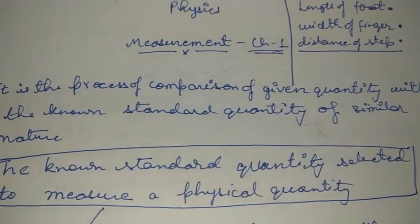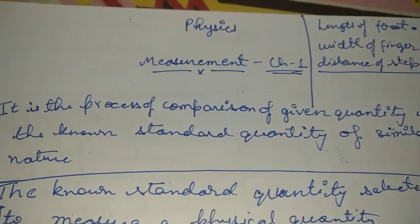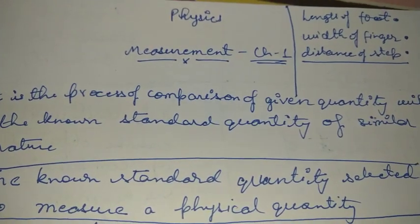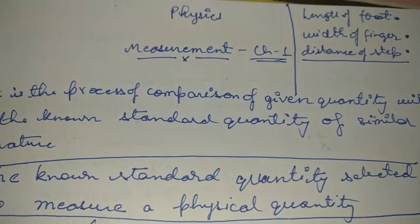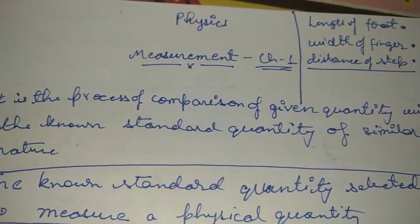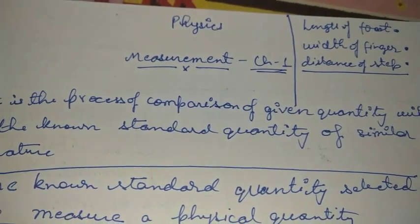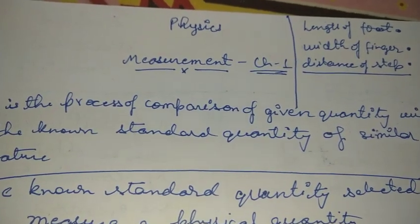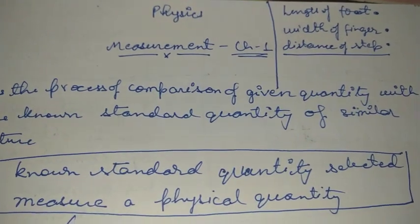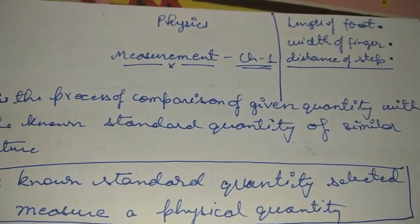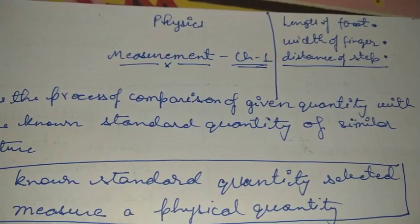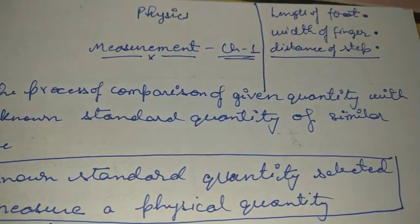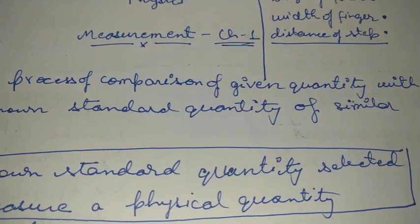Hello children, welcome everyone to the first session of physics. Today the chapter we are going to start is the very first chapter — experimentation and measurement. This chapter must have been familiar to you from previous classes like class 6, 7, and 8, but those were brief. Now when we deal with it in physics, we have to be very specific, precise, and exact — because physics is an experimental science, basically a science of measurements that deals with exact science.